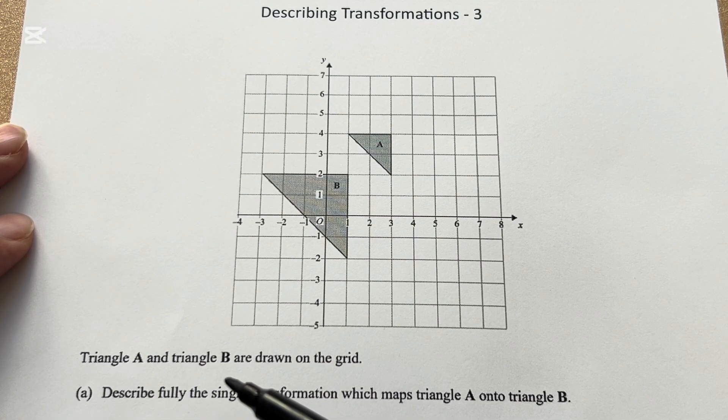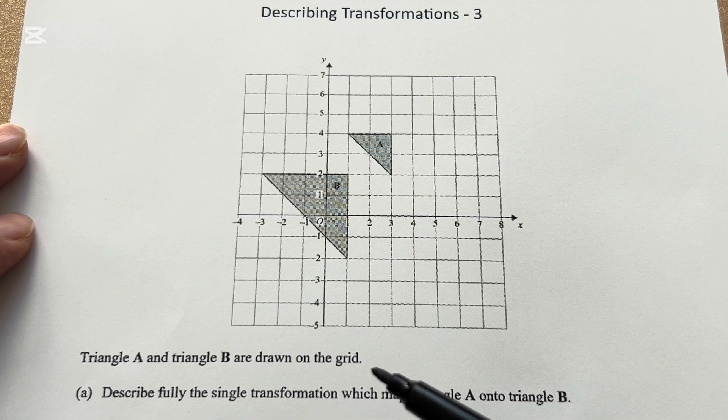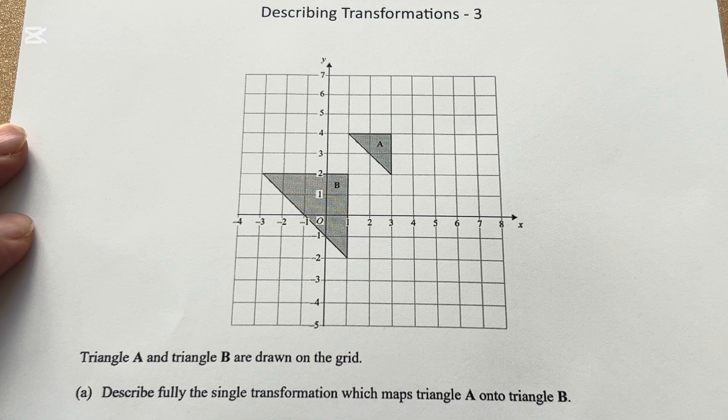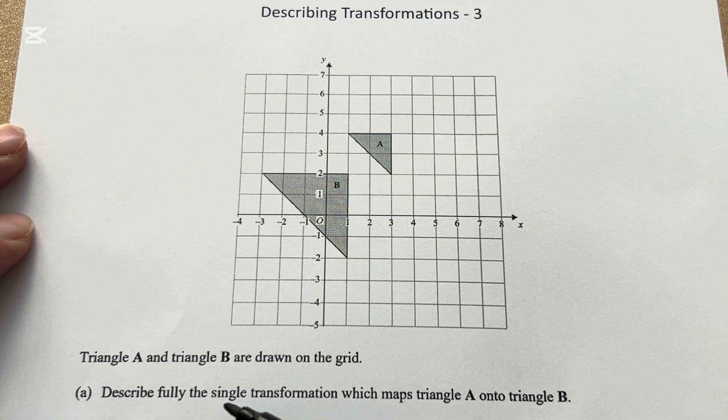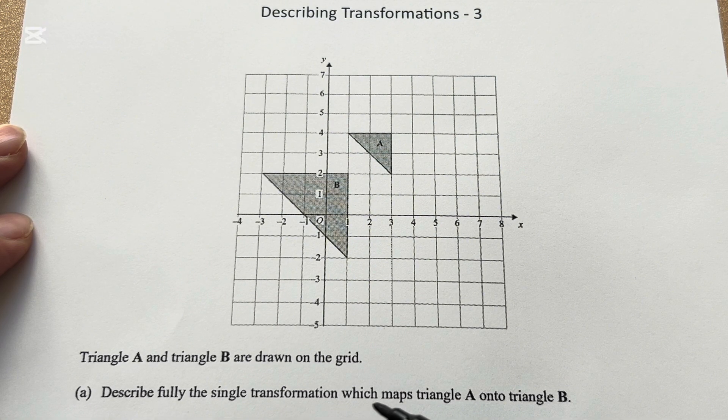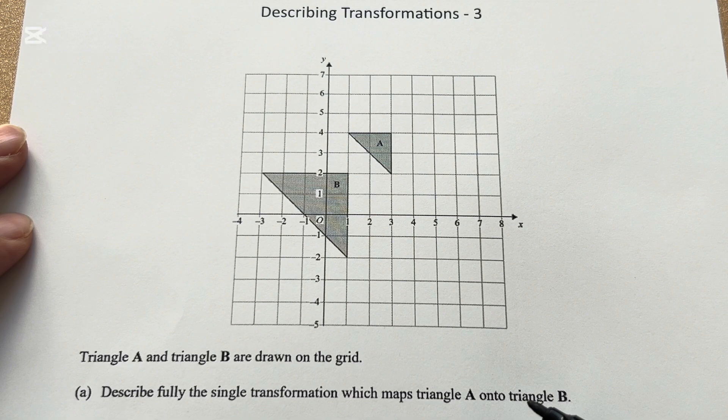Triangle A and triangle B are drawn on the grid. Describe fully the single transformation which maps triangle A onto triangle B.